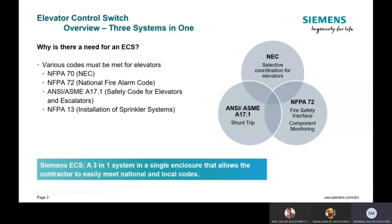The national codes prescribe the requirements for sprinklers, elevators, and electrical equipment. These are NFPA 70, NFPA 72, ANSI ASME A17.1, and NFPA 13. The elevator control switch has a system that includes a shunt trip, fuses, and a communication method with the fire alarm control panel. So it's really three systems in one.